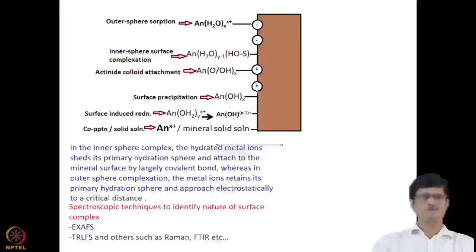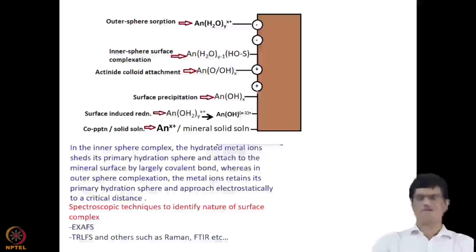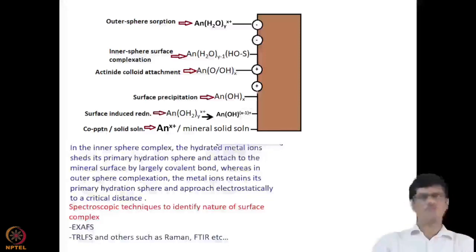These are the different types of interactions actinides form with clay minerals at the mineral surface: sorption, surface complexation, precipitation, co-precipitation, and reduction at the surface. These can be monitored by spectroscopic techniques such as XAFS or TRLFS, and also by other techniques such as Raman spectroscopy and Fourier transform infrared spectroscopy.